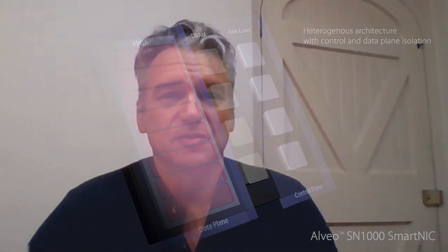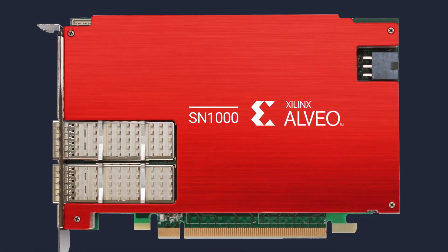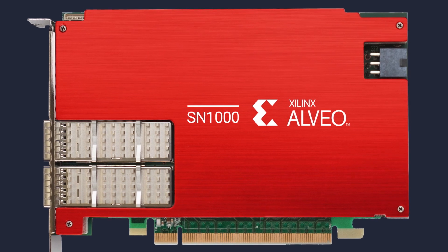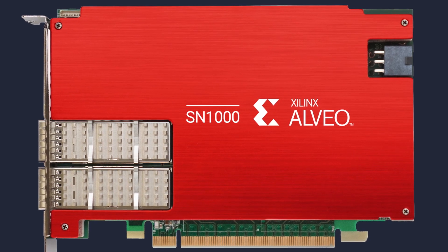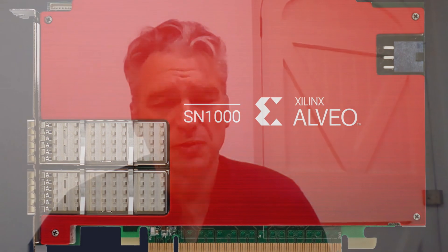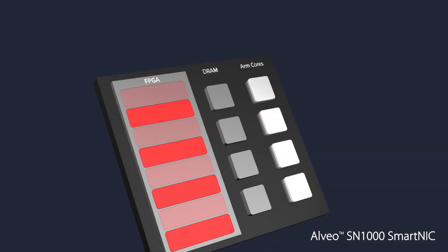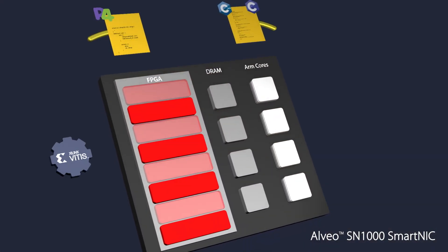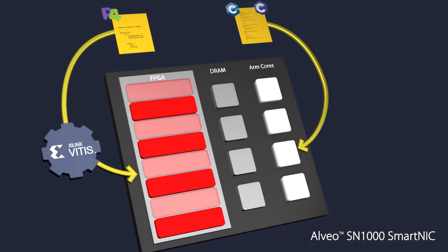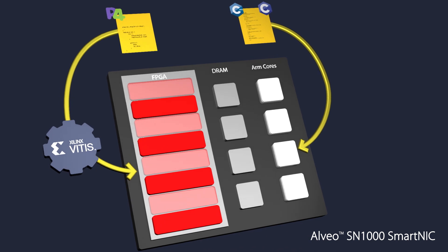We want to make it easy for people to integrate the SN1000 in their network, and the important thing for programming is to make as little disruption as possible. The approach Xilinx is taking to make programming of SmartNICs easy involves support for high-level programming tools and high-level programming languages like P4, for example.